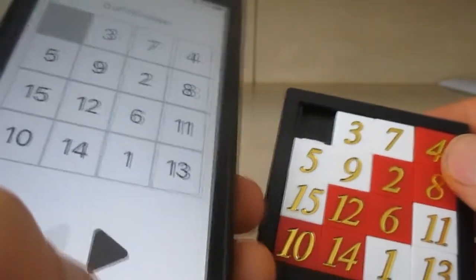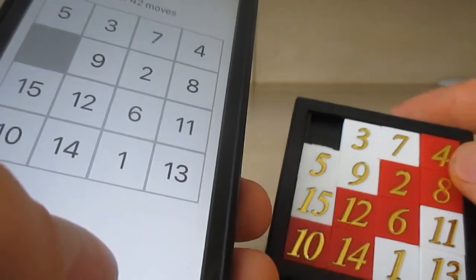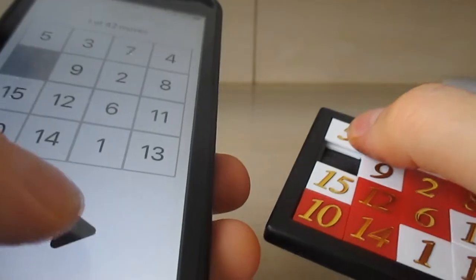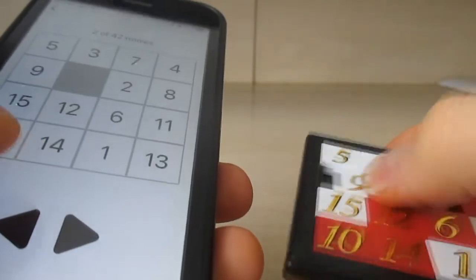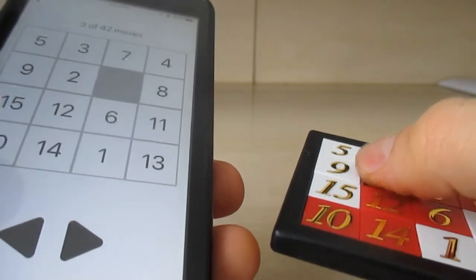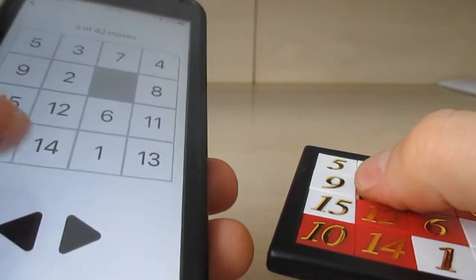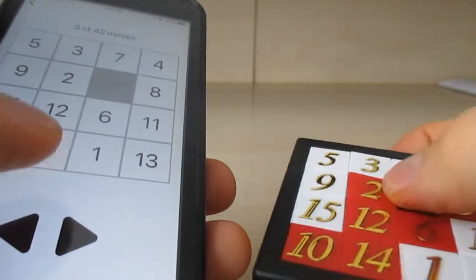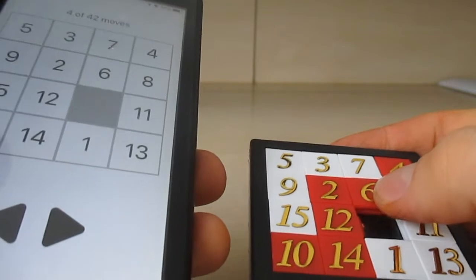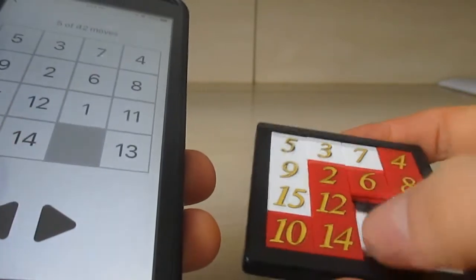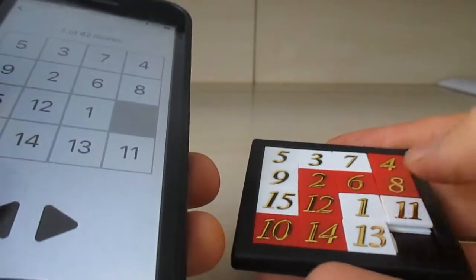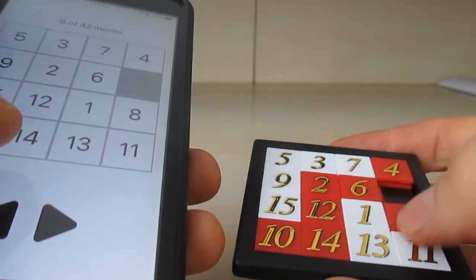So in my case it's going to be like this. I have to move the 5 over here, 9, 2, like that, 2, 6, 1, 13, 11, 8, 6.